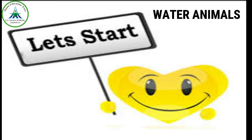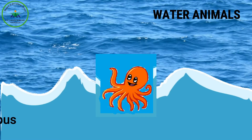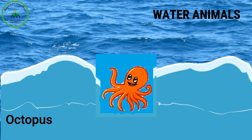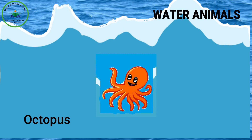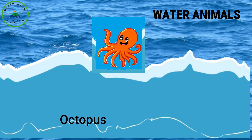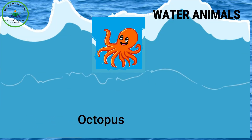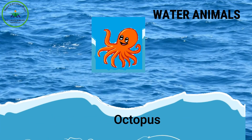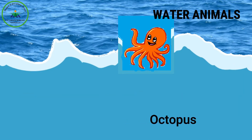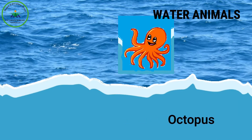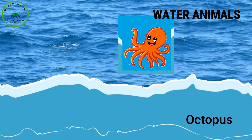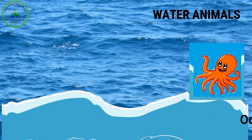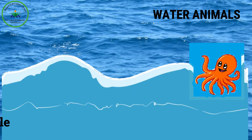Which water animal is this? Yes, this is an octopus. O for octopus. An octopus has a soft body and large eyes, and it has eight arms.